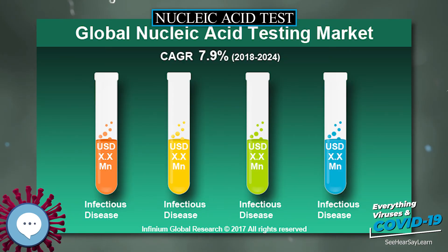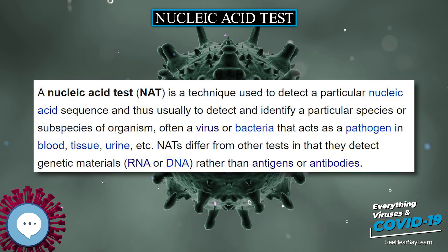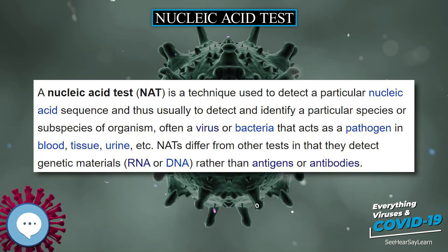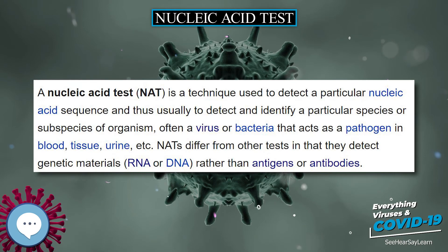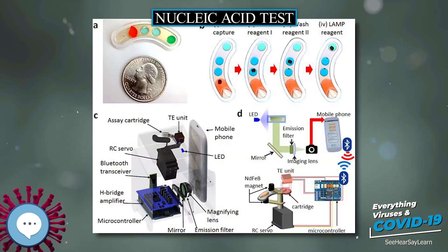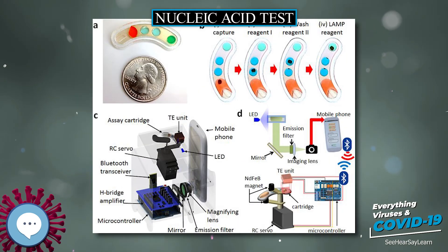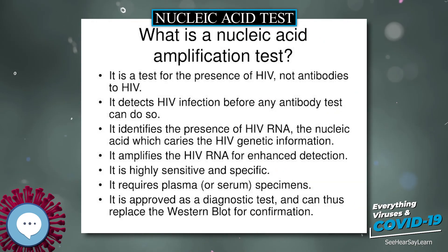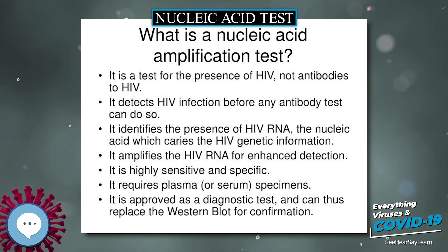In 2013, Selig's group published a paper about fluorescent molecular probes which also utilize the toehold exchange reaction. This enabled the optical detection of correct targets and SNP targets. They also succeeded in the detection of SNPs in E. coli-derived samples.